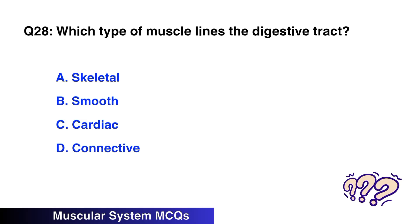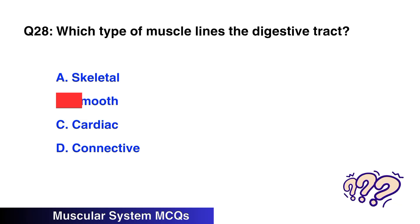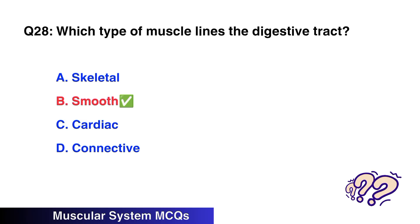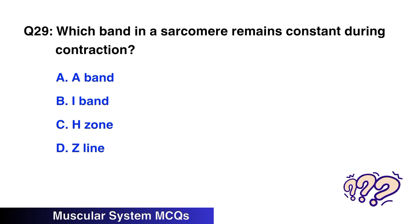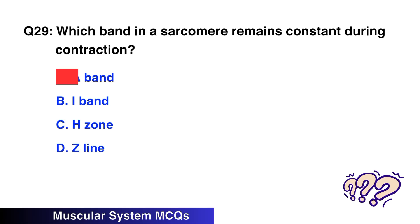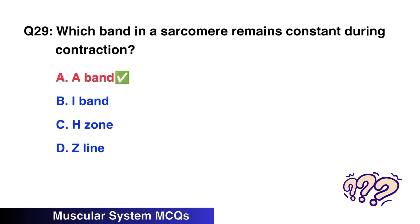Question No. 28: Which type of muscle lines the digestive tract? The right option is B: Smooth muscle. Question No. 29: Which band in a sarcomere remains constant during contraction? The right option is A: A-band.